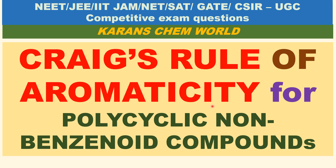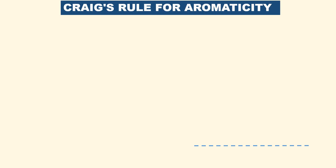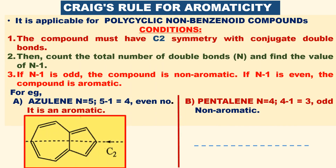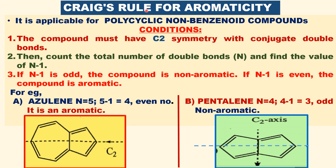It is applicable only for polycyclic non-benzenoid compounds. Let us see the rules and conditions of Greig's Rule. Let us now apply Greig's Rule to determine whether the compound is aromatic or non-aromatic. This rule is applicable for only polycyclic non-benzenoid compounds such as azulene and pentalene.